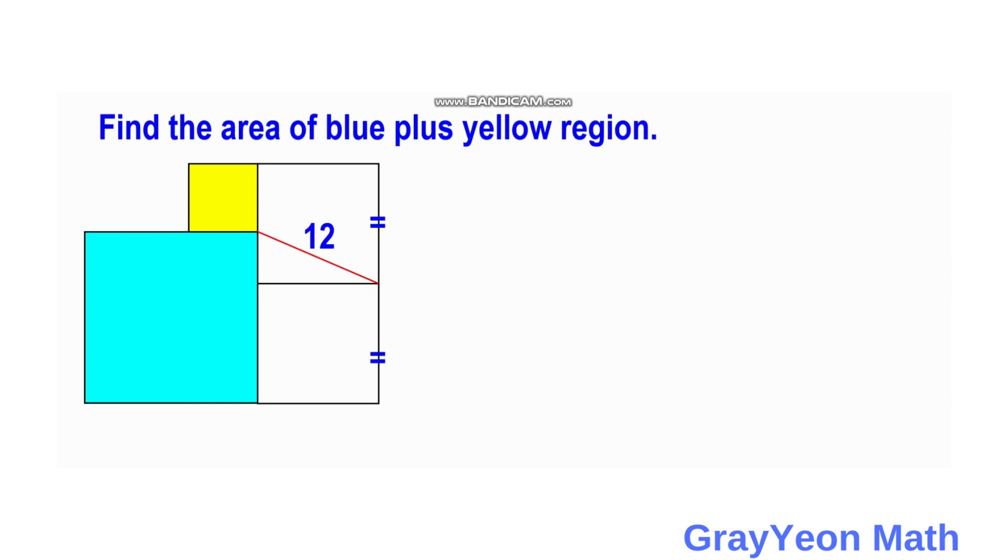Find the area of the blue plus the yellow region. We are given a yellow square and a blue square and two squares on the right side of these two squares and a distance of 12 from the center of these two white squares and the point of intersection of this yellow and blue square. We are to find the area of this combined blue and yellow squares.